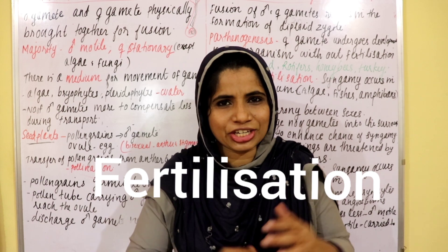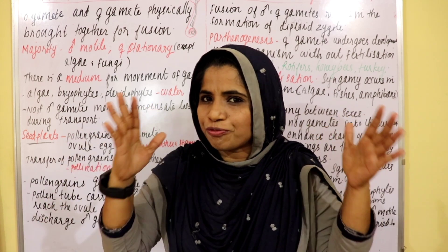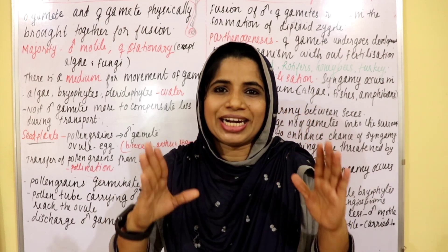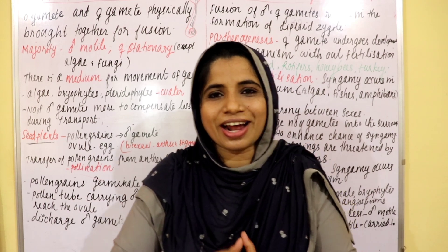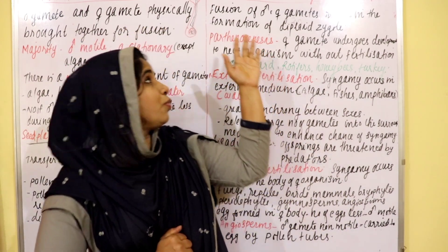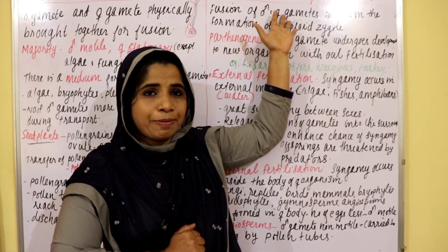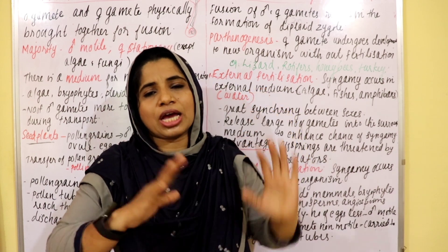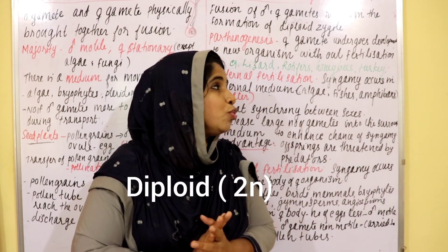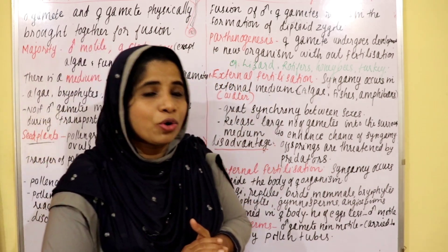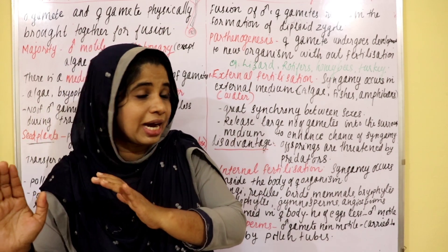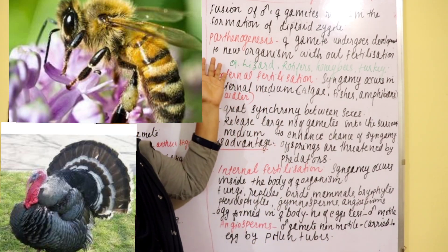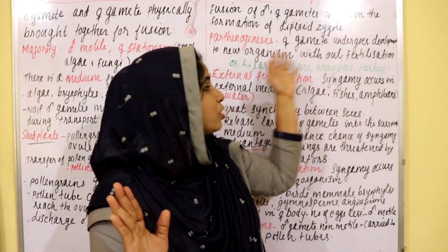The main step — fertilization — is the fusion of male and female gametes to produce a diploid zygote. The fusion of male and female gametes results in the formation of a diploid zygote.